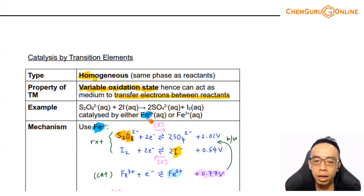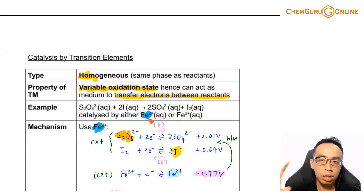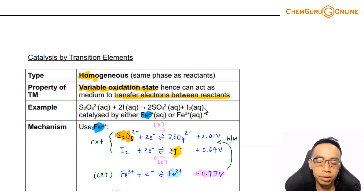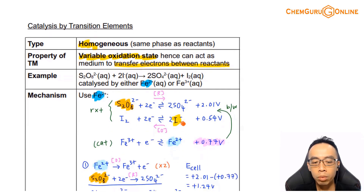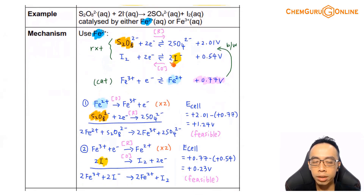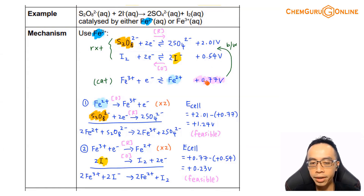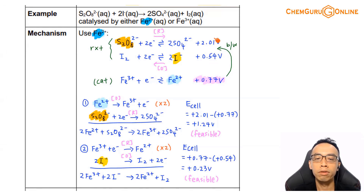So Fe²⁺ comes in and says: you don't like each other — never mind, I'll act as the middleman. You transfer the electron to me, I'll pass the electron to the other reactant. Fe²⁺ actually interferes with and changes the mechanism. To write down the mechanism, we consider the half-equations involving the reactants, which are already written, and the half-equation involving the catalyst. The E-value involving the catalyst must be in between the E-values for the reactants — this is an important criterion.